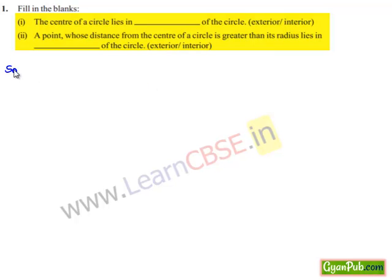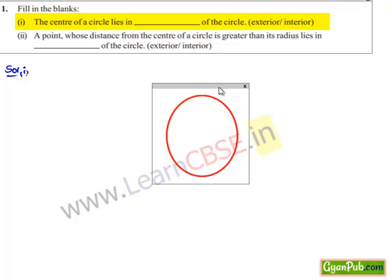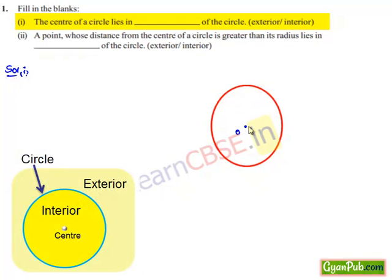Moving on to the solution for the first bit, we know that a circle is a collection of all points in a plane which are at a fixed distance from a fixed point in a plane. Here the fixed point is known as the center and the fixed distance is known as the radius. Therefore, the center of the circle always lies in the interior of the circle.